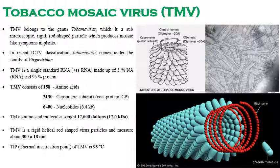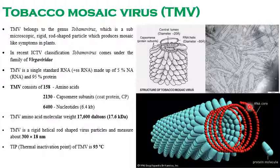TMV is a rigid rod-shaped virus measuring 300 nm in length and 18 nm in diameter. As seen in the diagram, the red-colored structure represents the nucleic acid, while the pink/outer structure represents the protein coat (protein molecules). The thermal inactivation point — the temperature at which TMV is killed — is 93 degrees centigrade.